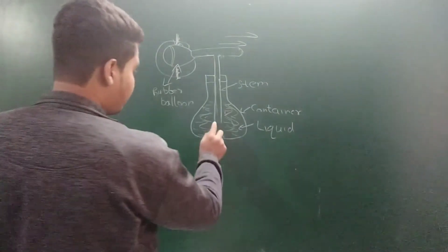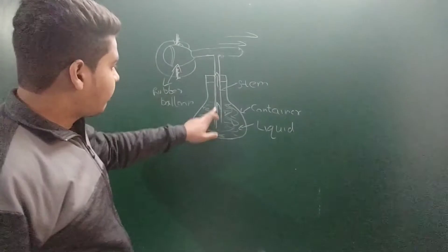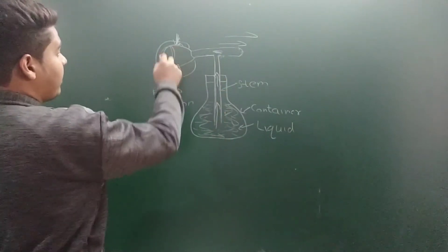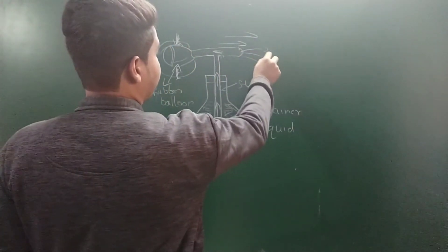When the liquid moves upwards, it flows through the stem and comes out. Then again if I compress this balloon, the liquid comes out in the form of a spray.